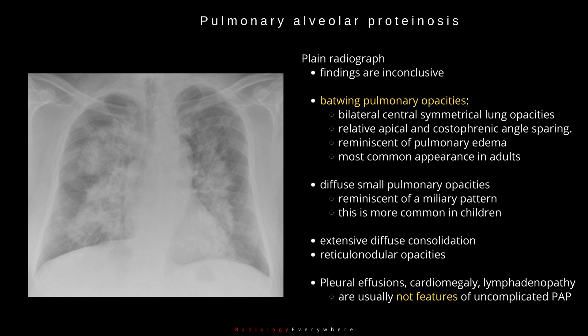On plain radiograph, chest radiograph findings are inconclusive. You can see batwing pulmonary opacities — bilateral central symmetrical lung opacities with relative apical and costophrenic angle sparing — reminiscent of pulmonary edema. This is the most common appearance in adults. The second pattern is diffuse small pulmonary opacities, reminiscent of a miliary pattern.